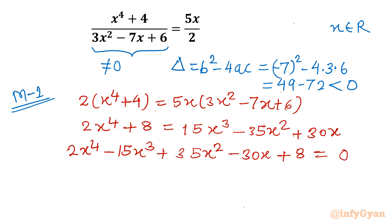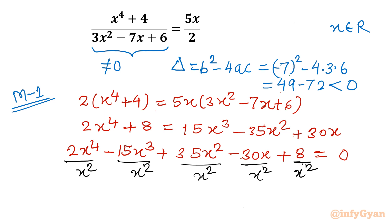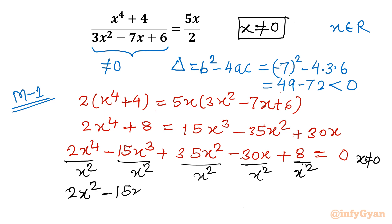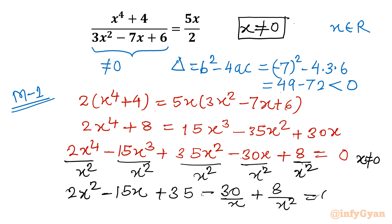This is a quartic equation. We have to solve it. If you look at the coefficients, one thing is very clear: we can divide by x square. Let us divide every term by x square. Note that x equal to 0 is not a solution of the original equation — you can put and check. So we can divide as x is non-zero.